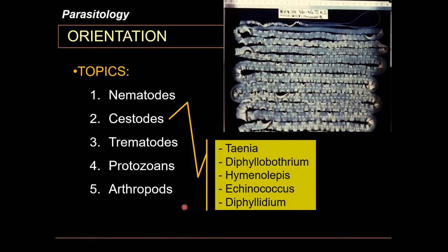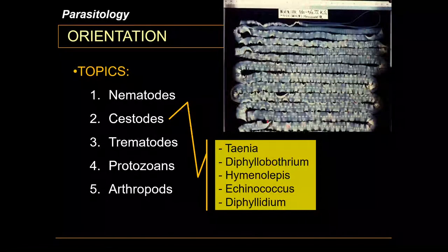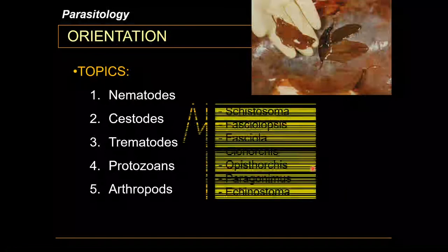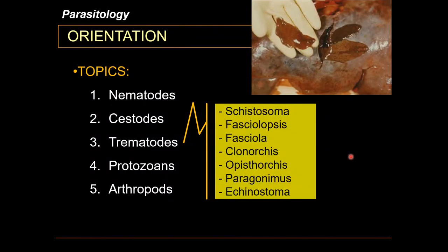For cestodes, you have Taenia, Diphyllobothrium, Hymenolepis, Echinococcus, and Dipylidium. The picture in the upper right-hand corner is the longest tapeworm — the longest parasite ever to infect man — the Diphyllobothrium latum, which is the fish tapeworm. Trematodes include Schistosoma, Fasciolopsis, Fasciola, Clonorchis, Opisthorchis, Paragonimus, and Echinostoma.